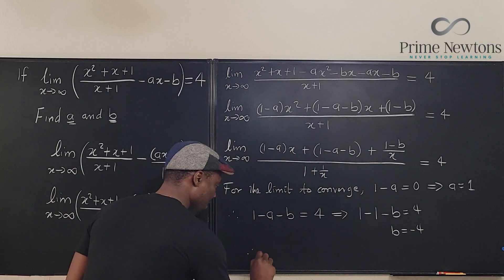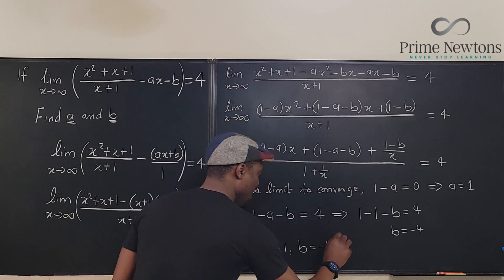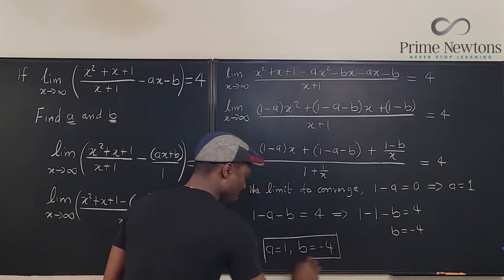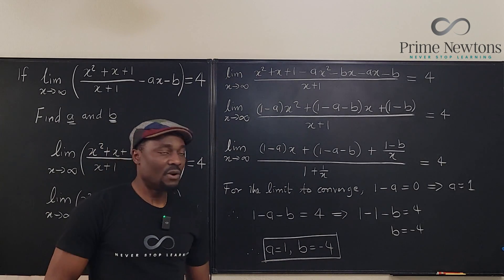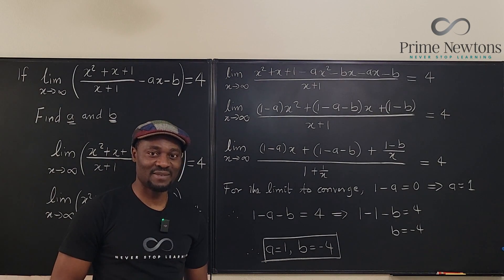Therefore, a equals 1, b equals negative 4. And these are the two constants involved in this. Never stop learning. Those who stop learning stop living. Bye-bye.